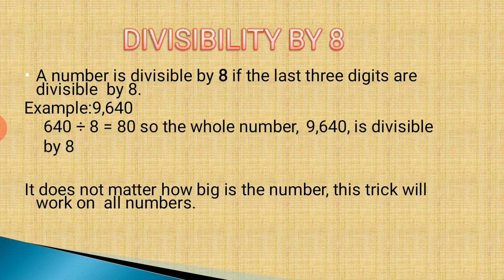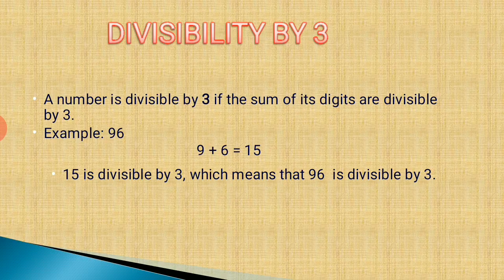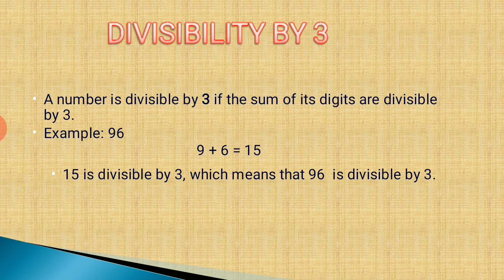Next is the divisibility rule of 3. A number is divisible by 3 if the sum of its digits is divisible by 3. For example, consider the number 96. The sum of its digits is 9 plus 6, which is 15. Since 15 is divisible by 3, the number 96 is also divisible by 3.